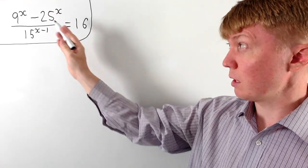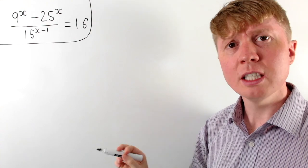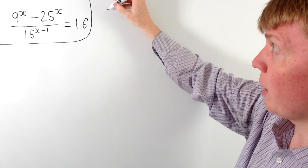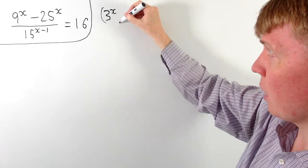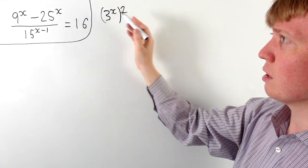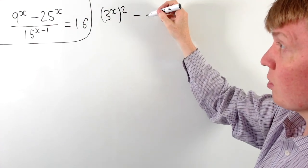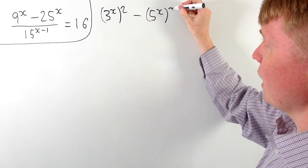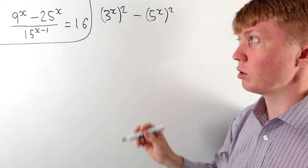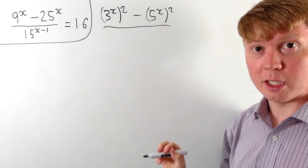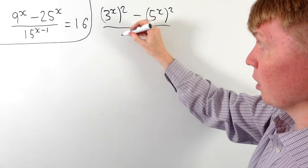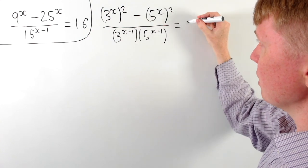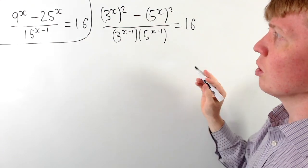This allows us to rewrite the expression on the left-hand side. Let's start with 9, which we know is 3 squared, so we've really got 3 squared to the power of x, which we can write as 3 to the power of x all squared. Similarly, 25 is 5 squared, so this is 5 to the x all squared. And in the denominator, 15 is 3 times 5, so we've got 3 to the x minus 1 times 5 to the x minus 1 in the denominator, and this is all equal to 16.